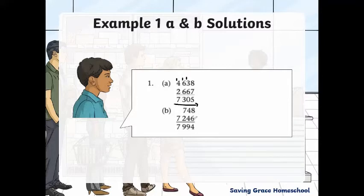Let's move on to question B. Again, we start with the units. We have 8 plus 6, which is 14, carry the 1. Then 4 plus the 1 is 5, plus 4 gives 9, so we carry nothing. 7 plus 2 is 9 again, and then 7 plus nothing gives us 7. So that's the final answer: 7,994.